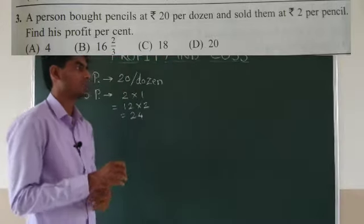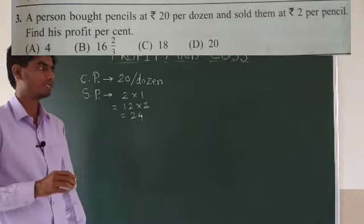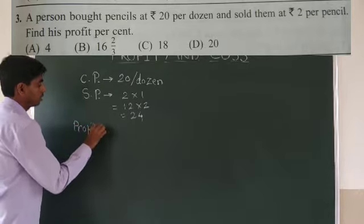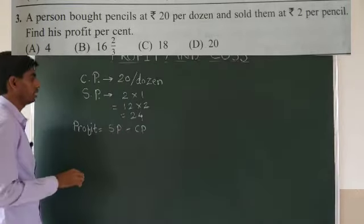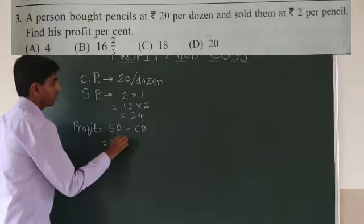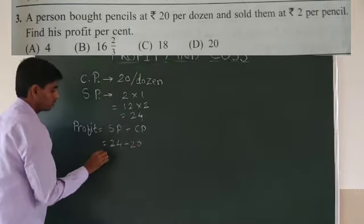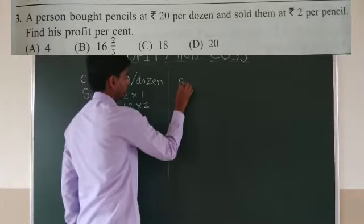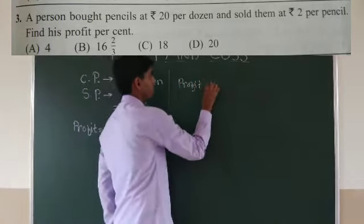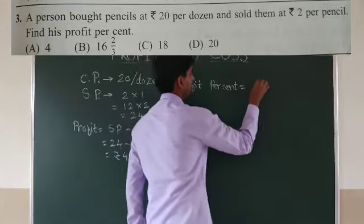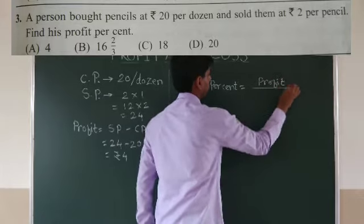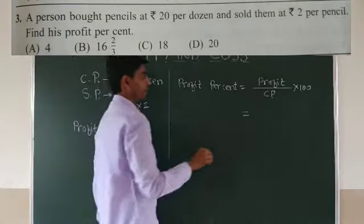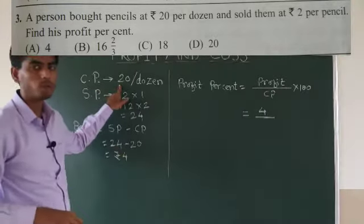Find the profit percent. To find profit percent, first find the profit. Profit equals selling price minus cost price. Selling price of one dozen pencils is Rs 24 and cost price is Rs 20, so the profit is Rs 4. Now the formula for profit percent is profit over cost price into 100. Our profit is Rs 4 and cost price is Rs 20. So 4 over 20 into 100 equals 20% profit in this transaction.